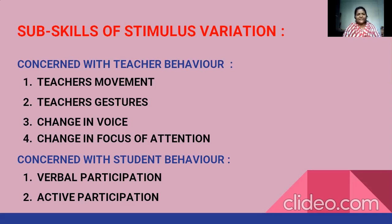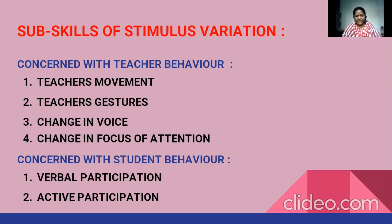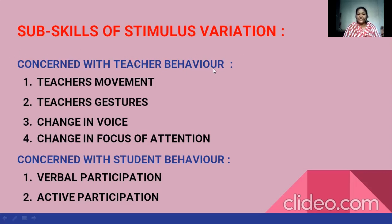The sub-skills of stimulus variation are divided regarding the behavior of teachers and the behavior of students. While using this skill, certain rules should be followed by the teacher. The teacher can also take participation from students to use different stimuli. So accordingly, we can study the different sub-skills concerned with teacher behavior and student behavior.